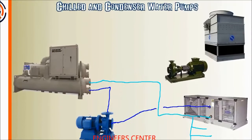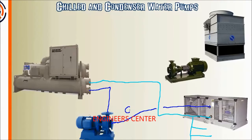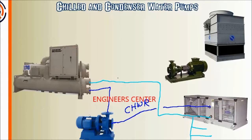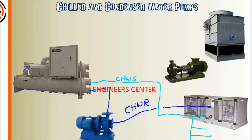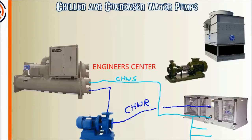Let's go ahead and label that — this would be the chilled water return, and this here is the chilled water supply. And this here would be the big loop; it would go through the pump, through the chiller, and back to the air handlers and so forth.